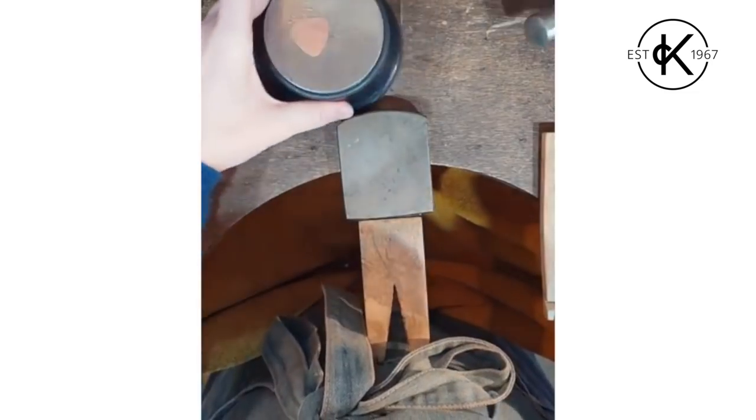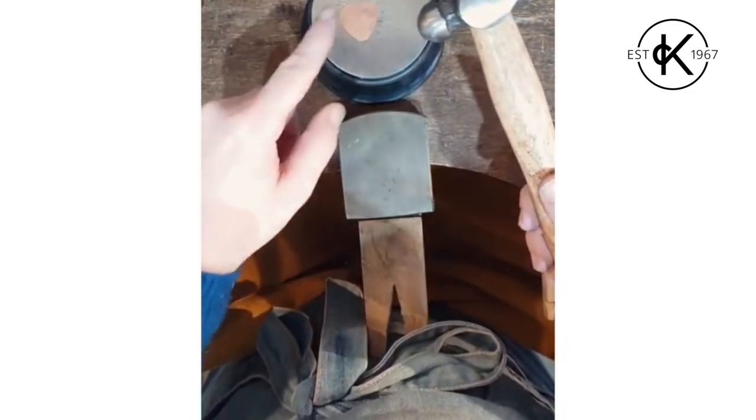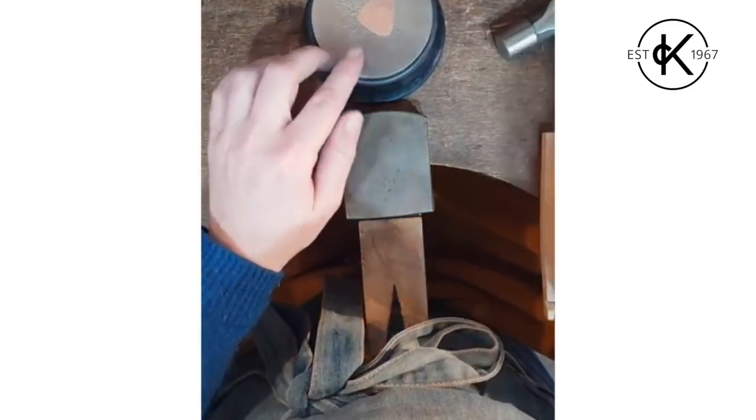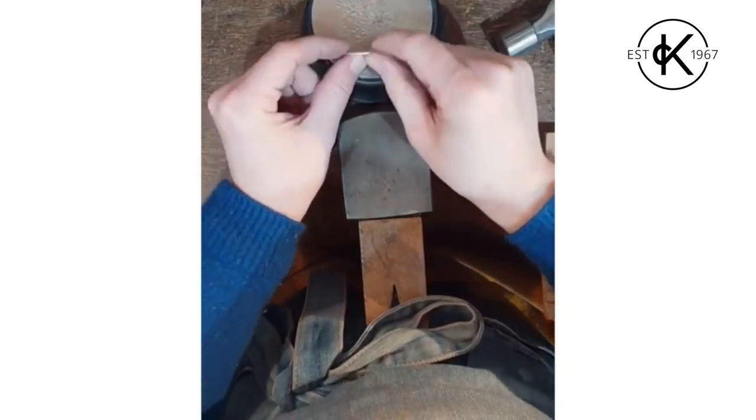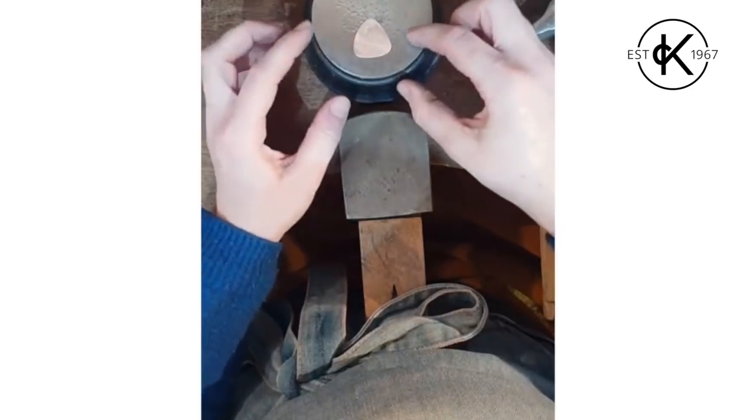When you do your hammering, what's going to happen is your hammer or your punch, or whatever you're using to make your indentations and texture with, is going to push down into the metal, and that's going to leave some sort of indent or mark behind. Now, the thicker the metal, in general, the more the metal can be pushed down and the more pronounced the indent and texture will be.